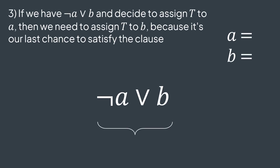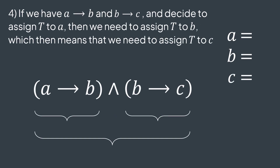Third thing: if we have the clause NOT a or b, and decide to assign the value true to a, then NOT a will be false. So to satisfy NOT a or b, b will be the last option — it has to be true. This is why we also assign the value true to b. And the last thing: if we need to satisfy a implies b and b implies c, and decide to assign the value true to a, then b also needs to be true, and because b is true, c also has to be true. This shows that we can have chained implications.